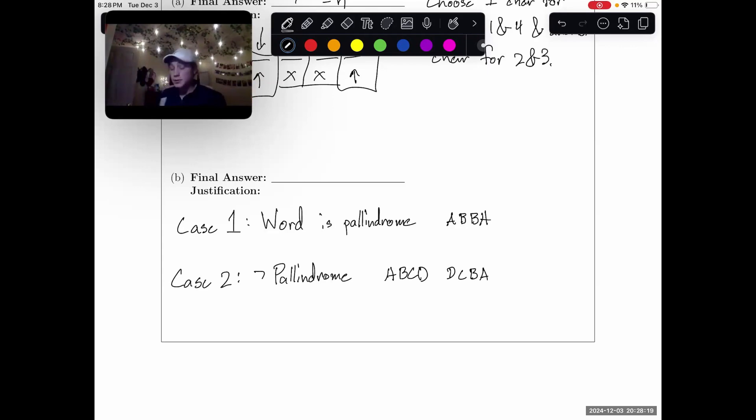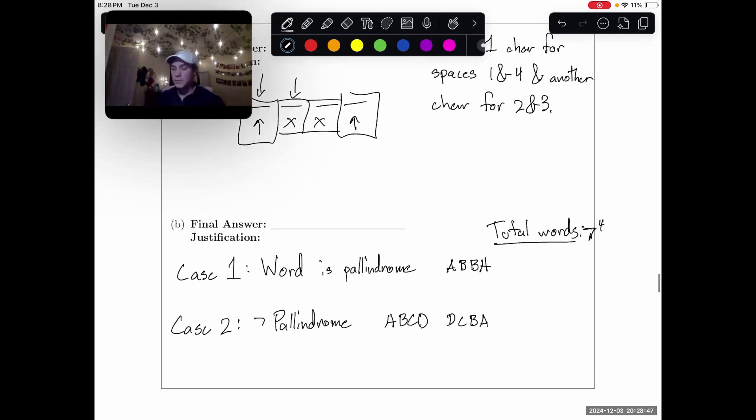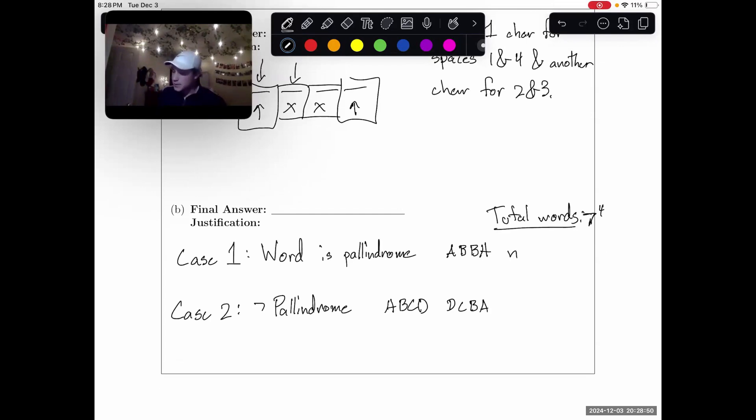So how many words are there total? Total words. We have seven character choices per space with four spaces, so that's seven to the fourth choices. And words that are palindromes, well, we calculated this above. It's seven squared, which we can just use N. So we can just say this is N, and we're going to count that all one time.